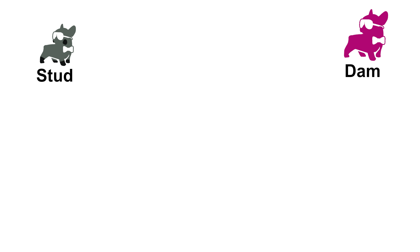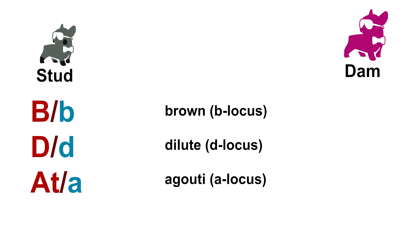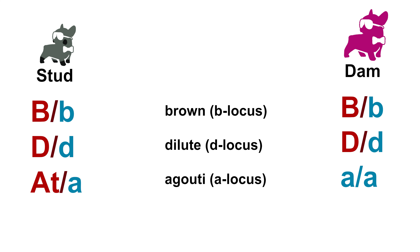Our stud is going to carry the gene pairings Bb as a brown carrier, Dd as a dilute carrier, and AT/A as a visible tan point carrier. Our dam will also have Bb and Dd as a carrier, but she will have AA on the A locus, meaning she's a solid.